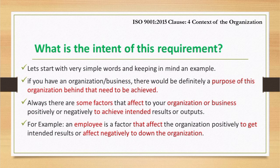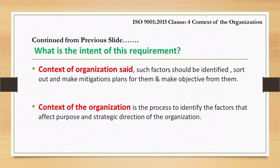Let's start with very simple words, keeping in mind an example. If you have an organization or business, there would definitely be a purpose that needs to be achieved. There are always some factors that affect your organization or business positively or negatively to achieve the intended results or outputs. For example, an employee is a factor that affects the organization positively to get the intended results or negatively to bring the organization down.